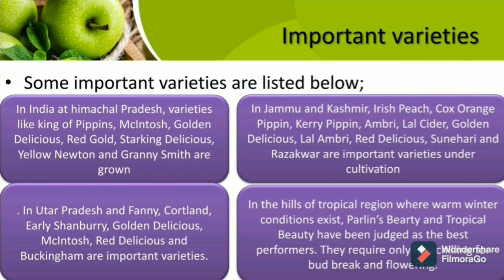Important apple varieties grown in India: Apple is a temperate fruit grown in temperate regions. In Himachal Pradesh, varieties like King of Pippins, McIntosh, Golden Delicious, Red Gold, Starking Delicious, Lal Newton, and Granny Smith are grown. Red Gold, Red Delicious, Golden Delicious, and Granny Smith are internationally acclaimed. In Jammu and Kashmir, Irish Peach, Cox Orange Pippin, Kiri Pippin, Ambri, Lal Ambri, Lal Cider, Golden Delicious, Red Delicious, Sunheri, and Razakwar are important varieties. In Uttar Pradesh, Fanning, Cortland, Early Shanburry, Golden Delicious, McIntosh, Red Delicious, and Buckingham are important. In the hills of tropical regions with warm weather, Palin's Beauty and Tropical Beauty have been judged as second best and best performers respectively, requiring only less chilling for bud breaking and flowering.